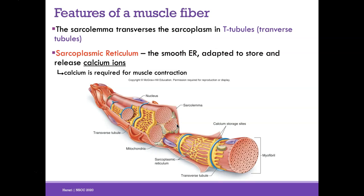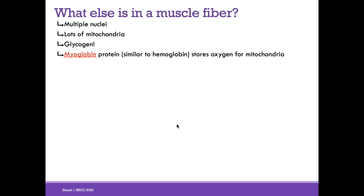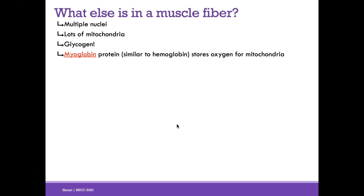Calcium is required for muscle contraction — that's the key point for now. Muscle fibers also have multiple nuclei, lots of mitochondria, and glycogen. We need glycogen as a glucose source and mitochondria to break glucose down into ATP.